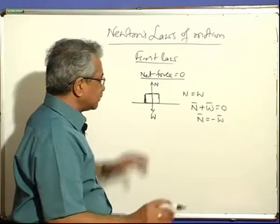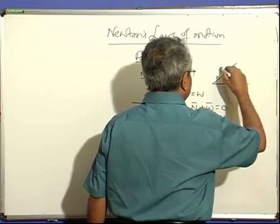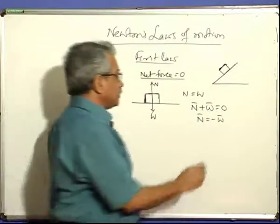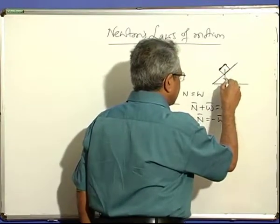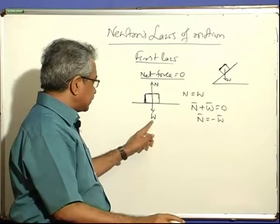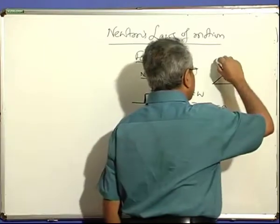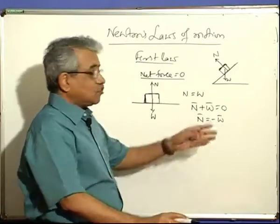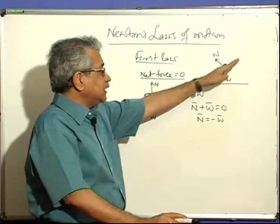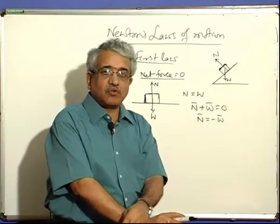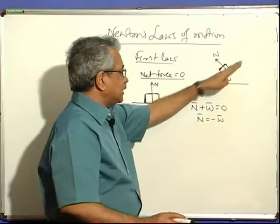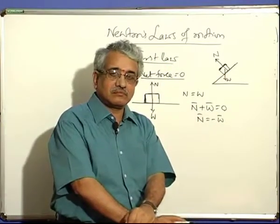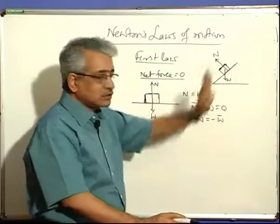Suppose the body is not on the table but on an inclined plane. Suppose it is a smooth plane. The weight of the body acts vertically downwards. The normal reaction occurs at right angles to the plane. You know what happens in this case: the smooth plane is there and the body is kept on it — it will slide down. It will not be at rest. The net force on the body is not zero; therefore, it is moving down.